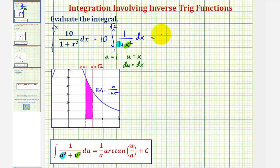We would have 10 times one divided by a, but a is one, so we'd have one divided by one, which we can leave off, and then we have arctangent of u divided by a, which would be x divided by one, or just x. So now we'll have 10 times when x is square root two, we have arctangent of square root two minus when x is one, we have arctangent one.